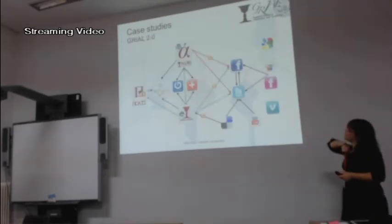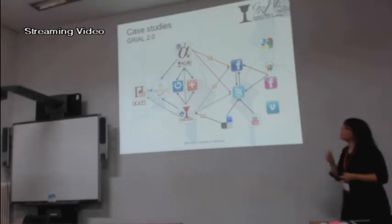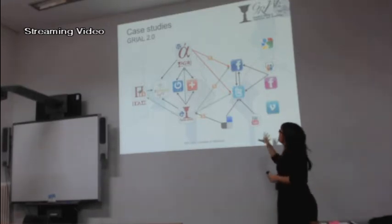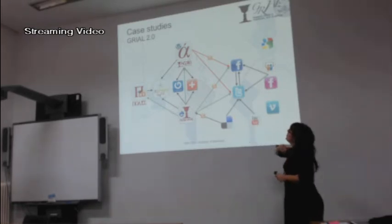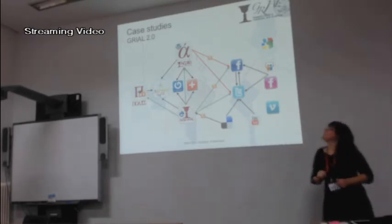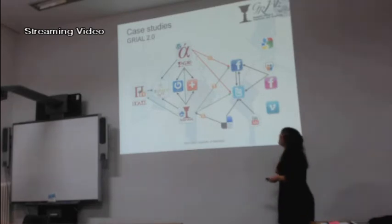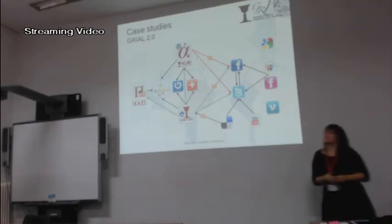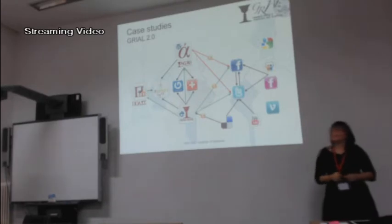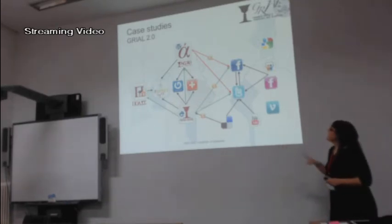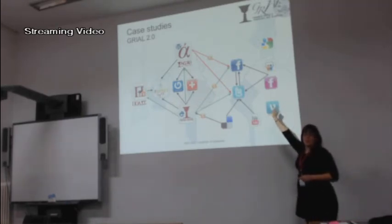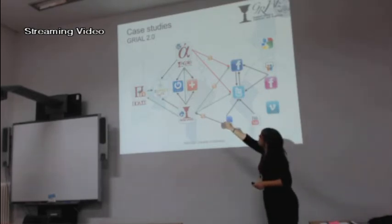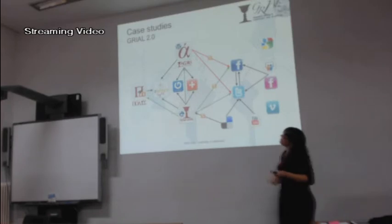In the second case, the ecosystem of GRIAL is based on the first experience developing the ecosystem of the university. So it has the same components, but we introduced new elements like social media connections. So there are a lot of information flows from the different elements.